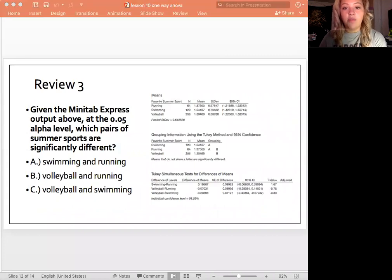And then lastly, given the Minitab Express output above at the 0.05 alpha level, which pairs of summer sports are significantly different? A, B, and C there. Go ahead and read this over and look at the Minitab output here to the right and see what you think the answer is. And so if we do look at this, our answer is going to be C, volleyball and swimming. Because if you look in the different summer sports, swimming and volleyball don't share a group letter while running and volleyball do, and then swimming and running do. So the only pair that doesn't share a group letter is going to be swimming and volleyball. Swimming only has A, volleyball only has B. And then also, that's one reason that we can tell that they're different. And then another reason is that our p-value is going to be smaller than in the pairwise comparison, it's going to be smaller than 0.05. So in that case, we know obviously that we're going to find it to be statistically significant. There's going to be a difference there. So that is how we find that out.